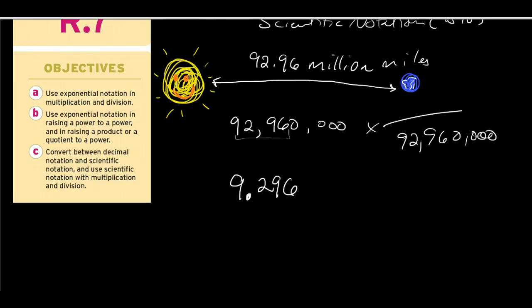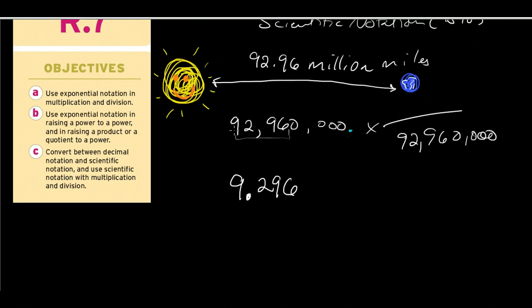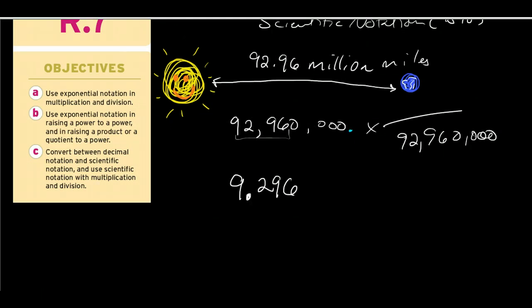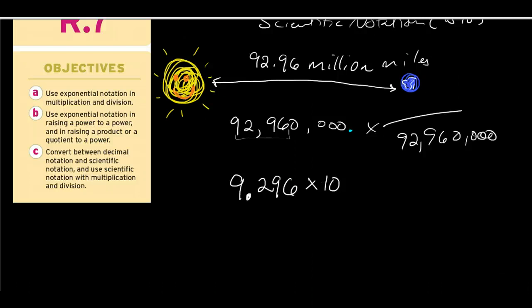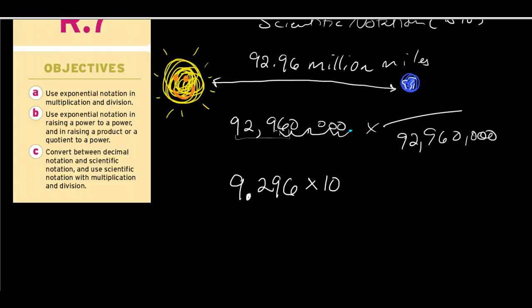And now what I need to know is from the decimal, the implied decimal that's behind that last zero there, how many times do I have to change place value, or basically multiply by 10 in order to get in front of the two here? Well, I go from the ones behind the ones to behind the tens, behind the hundreds, the thousands, the tens thousands, the hundreds thousands, the millions, and the tens millions.